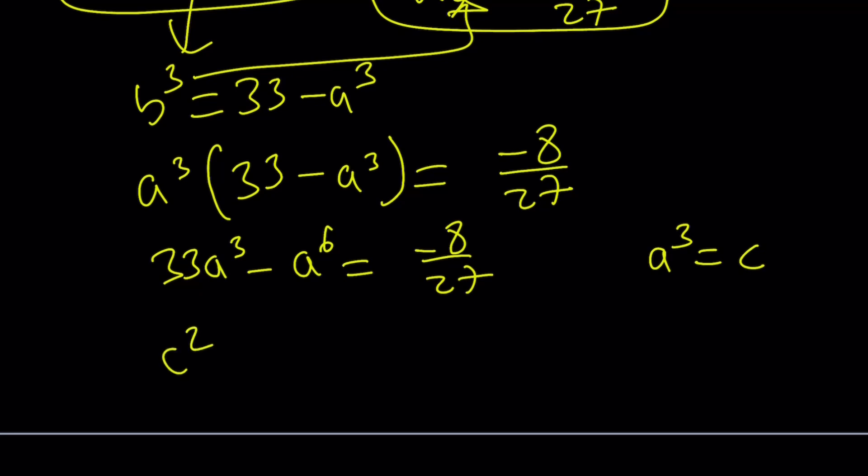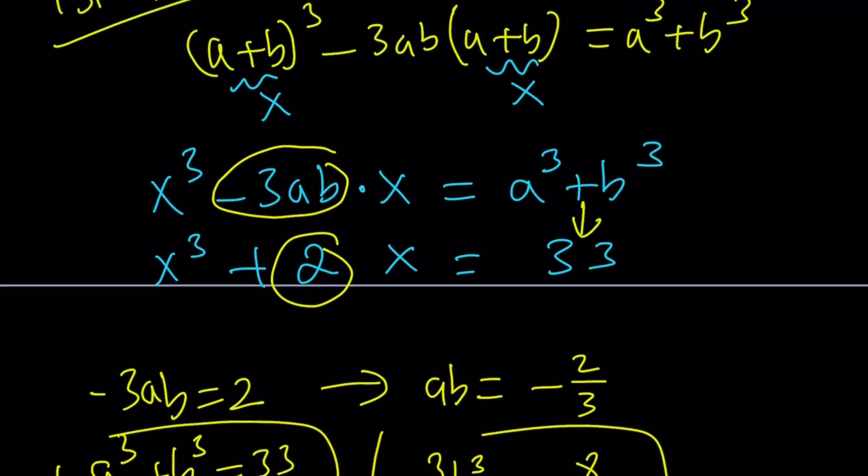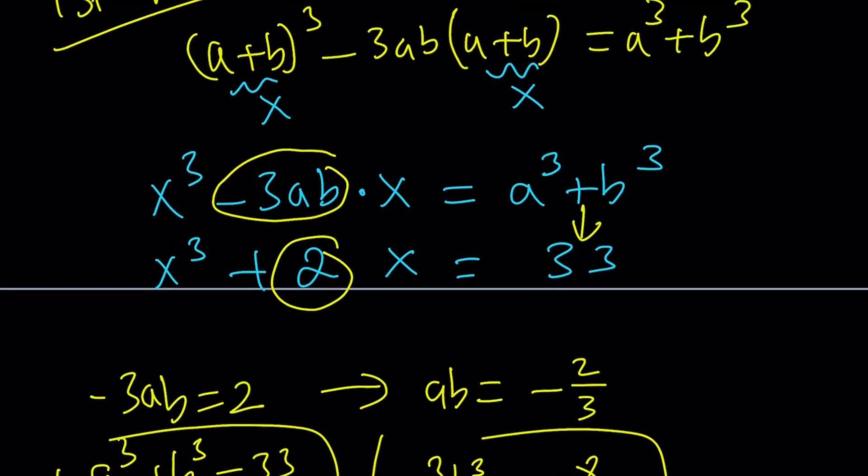you're going to get c² - 33c - 8/27 = 0. And then, if you want, use the quadratic formula or make a common denominator, multiply everything by 27, which is going to give you very large numbers anyways. After finding c value, you can cube root it, and then you can also find b³, and put it together. x is going to be a plus b. And as you can see, this is going to be very, very painful.